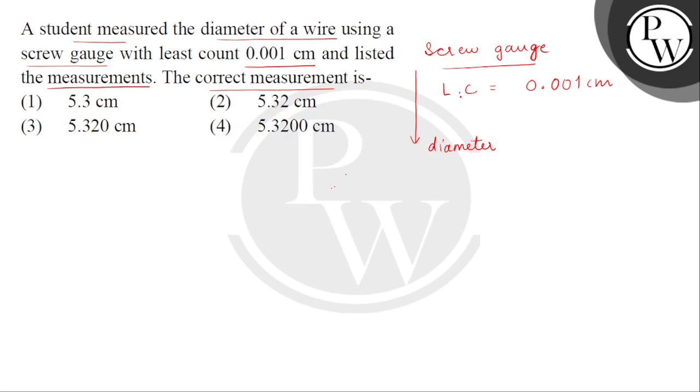So we can see that the least count is up to 3 places of decimal. So joh hum express karenge diameter of wire, us ko bhi express karenge hum up to 3 places of decimal. Is tarah se, yaha zero number aur non-zero number both possibilities lie.